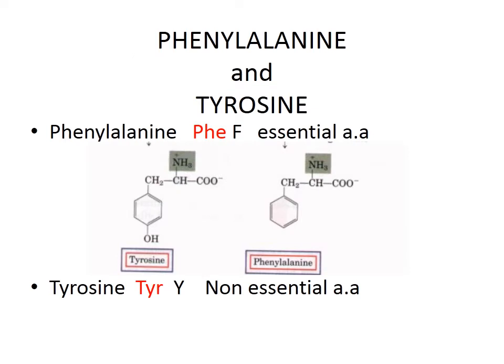First we will see the structure of phenylalanine and tyrosine. As we have studied in amino acid part 1, the classification and structures: phenylalanine is an aromatic amino acid having a phenyl ring — phenyl with alanine — and we call it phenylalanine. Tyrosine has a phenol ring with alanine plus a hydroxyl group. Phenylalanine is an essential amino acid and tyrosine is a non-essential amino acid.